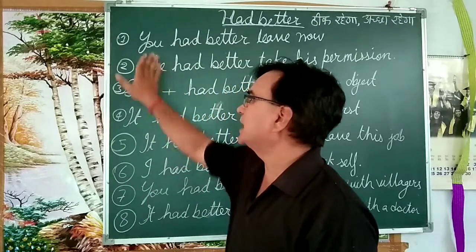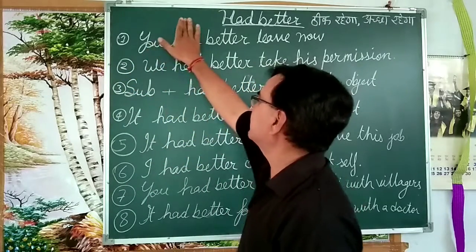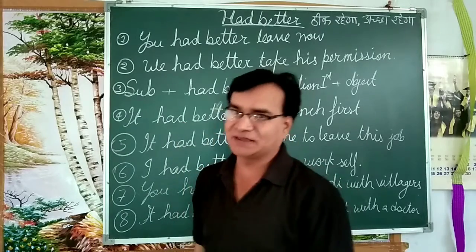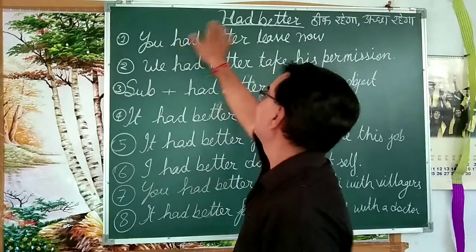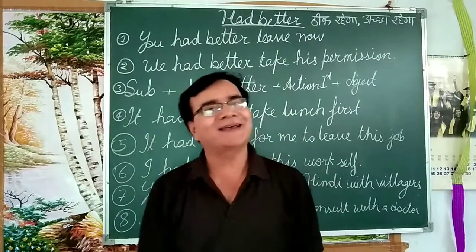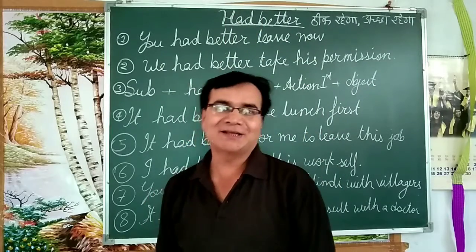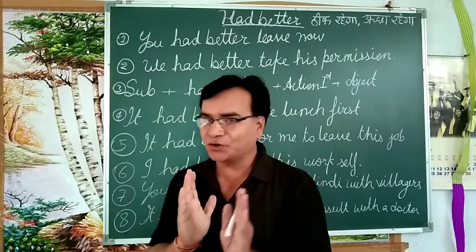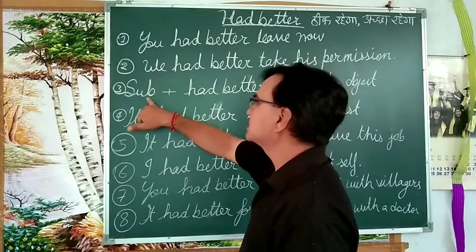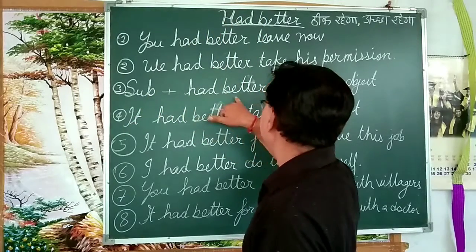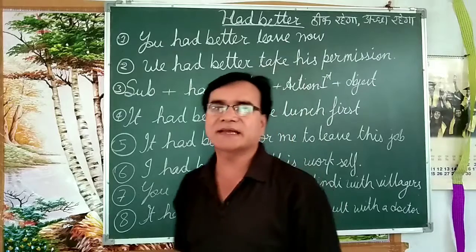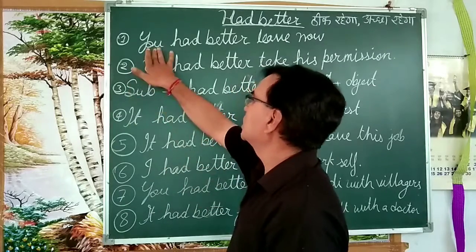Here, we learn how to use 'had better.' We use it too much. It means it will be better or good — ठीक रहेगा और अच्छा रहेगा. Where we have to use it, we use 'had.' The structure is: Subject + had better + action verb + object + extension. Just like that.